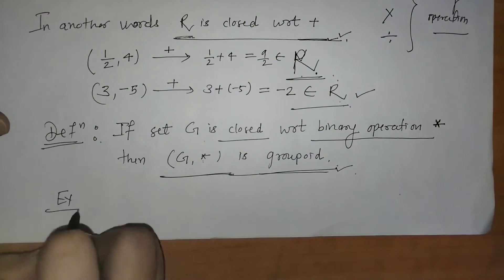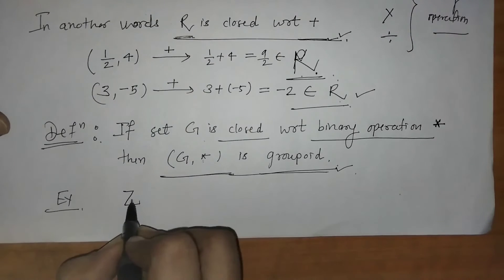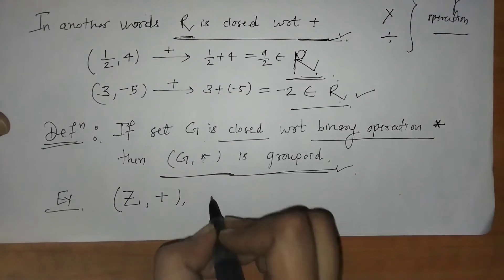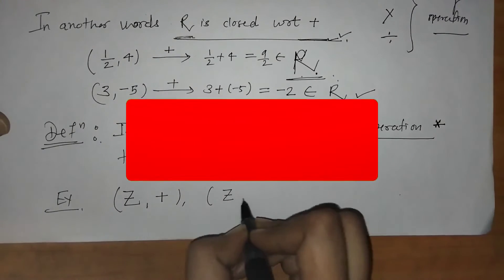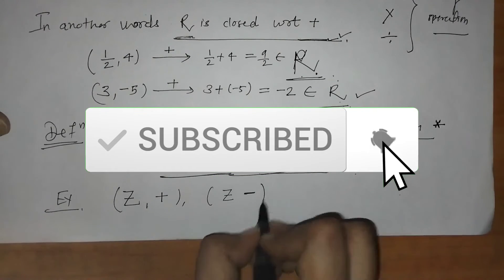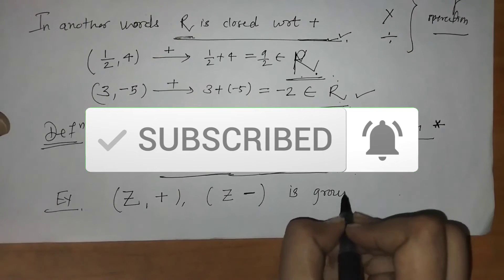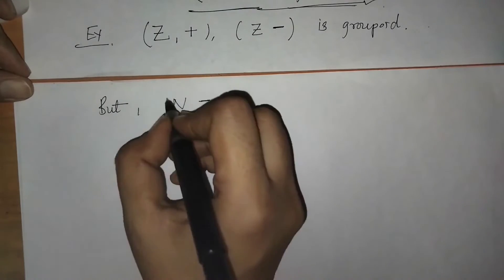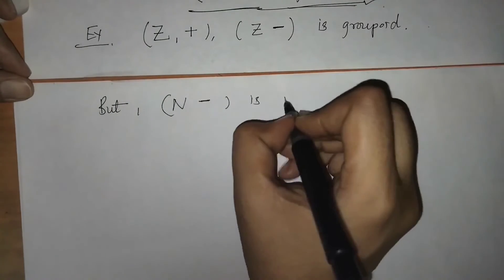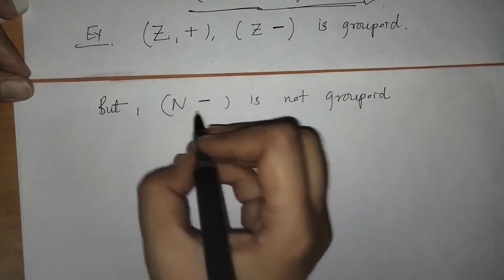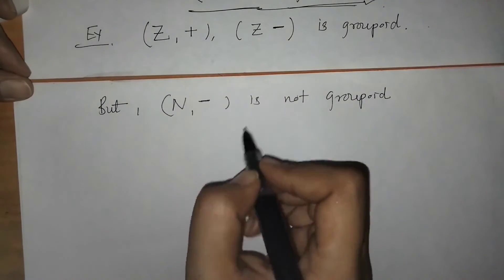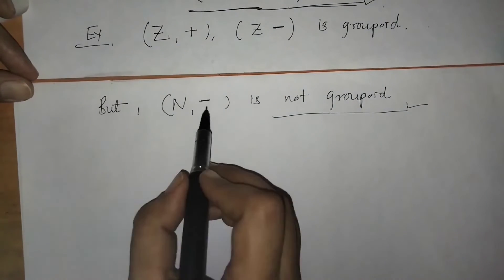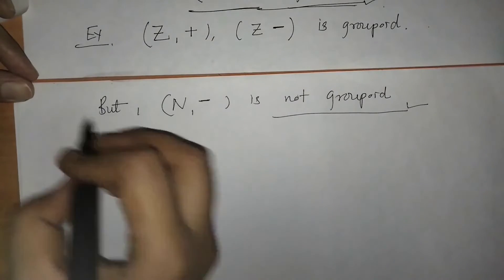For example, if we have the set of integers, then the set of integers with the operation addition is a groupoid, and the set of integers with the operation subtraction is also a groupoid. Next, we can check that the set N with the subtraction operation is not a groupoid, because when we take any two natural numbers and operate subtraction, we will not always get a natural number.